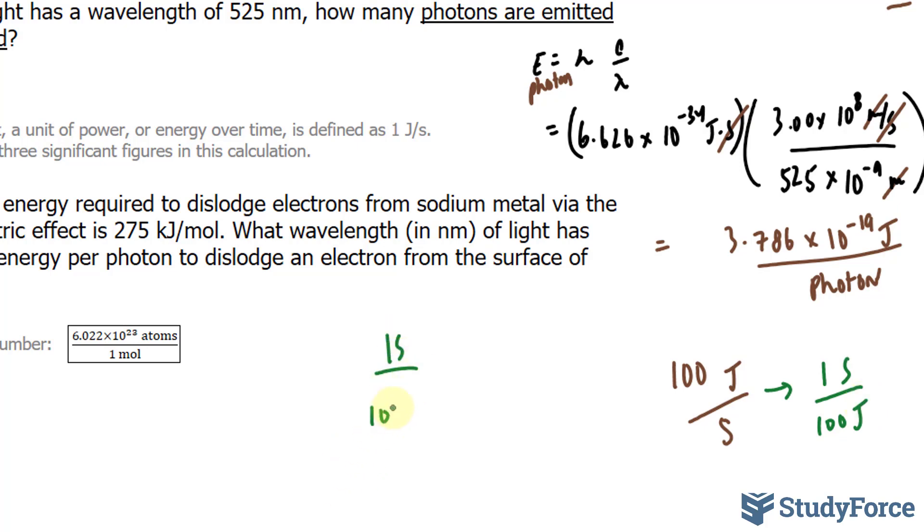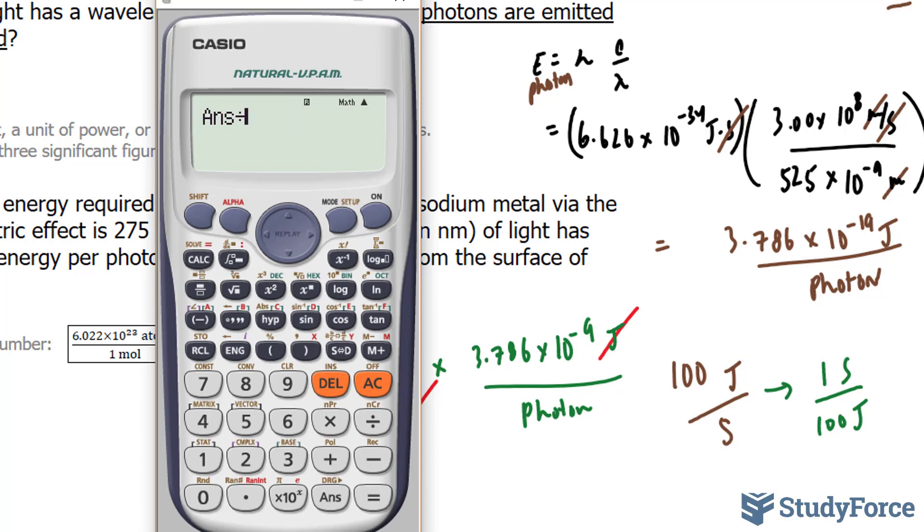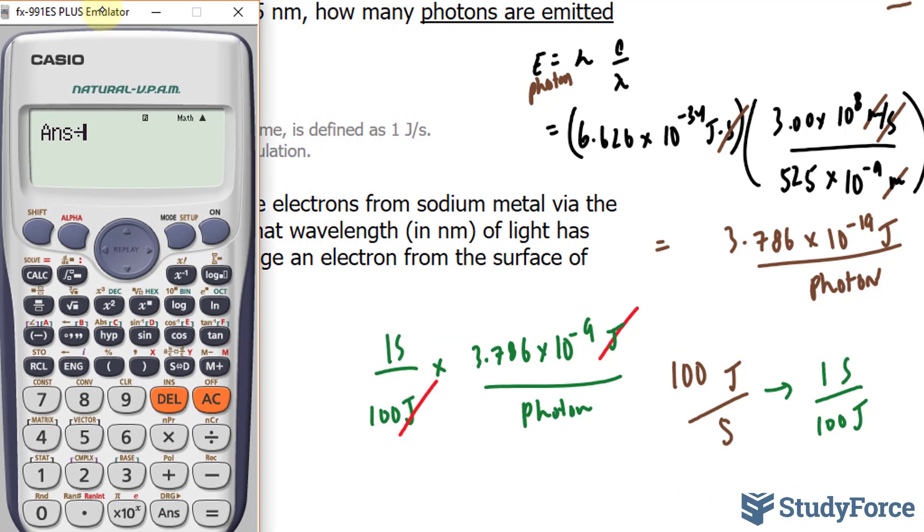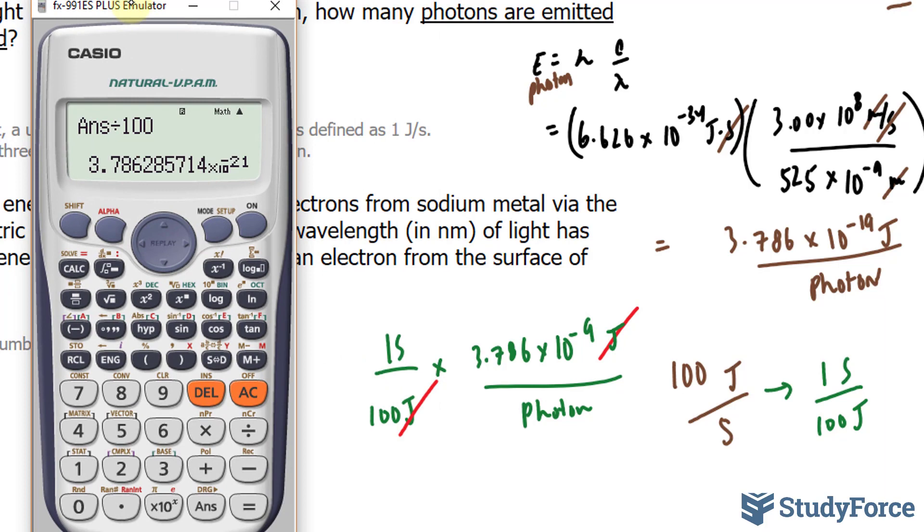Look what happens if I do that. 1 second per 100 joules times 3.786 times 10 to the power of negative 19 joules per photon. They're asking for photons per second. So this joules and this joules will cancel out leaving us with seconds per photon. The number that we have on our screen divided by 100, but we want photons per second. This is seconds per photon. So I'll take the reciprocal of this.